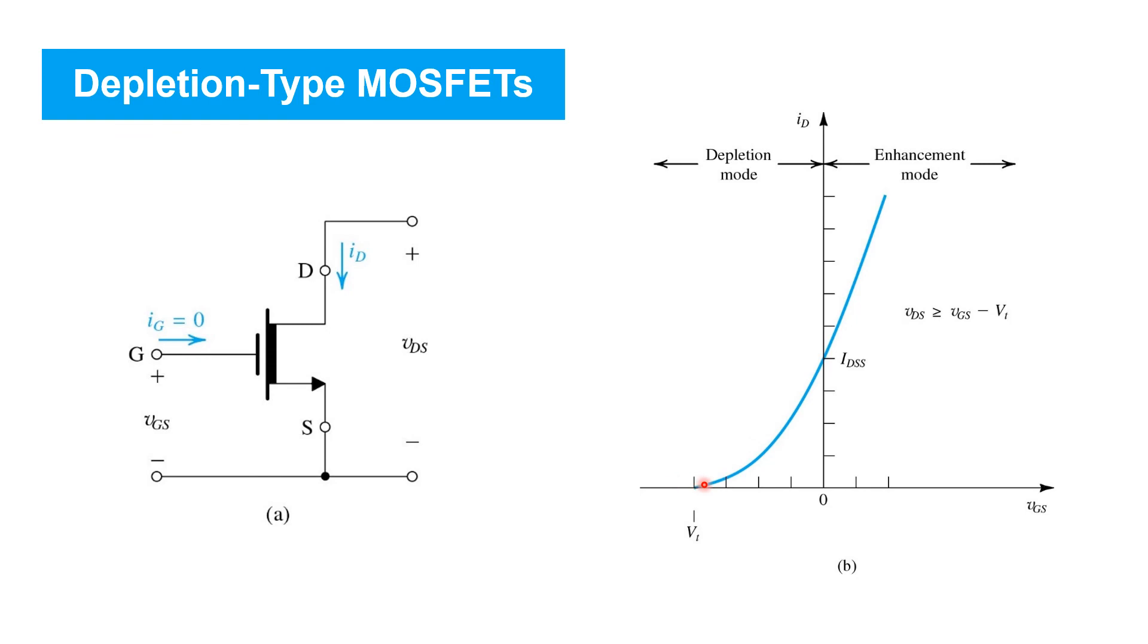So, with a negative threshold voltage, it means that even with VGS equal to zero, there is a channel region present, and current can flow between drain and source. So, MOSFETs of this type are identified with a slightly different schematic symbol. You'll note that there's a thicker bar connecting drain and source in the schematic symbol, and that's to indicate that a channel region is present even with zero gate source voltage applied. Now, in order to turn a transistor like this off, you need to apply a negative gate source voltage, and it has to be negative enough to overcome the negative threshold voltage. At that point, the transistor can be cut off.